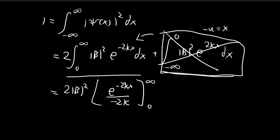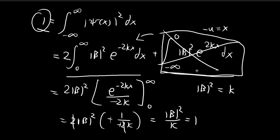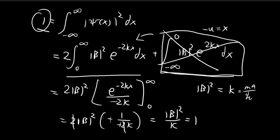Evaluating from 0 to infinity: substituting infinity gives e to the power of negative infinity, which equals 0. The lower limit gives e to the power of 0 equals 1, and the factor from integration is 1 over negative 2k. After simplification the 2s cancel, giving the absolute value of b squared divided by k equals 1. Therefore b squared equals k, and since k equals m alpha divided by h-bar squared, our normalization constant b equals the square root of m alpha divided by h-bar.